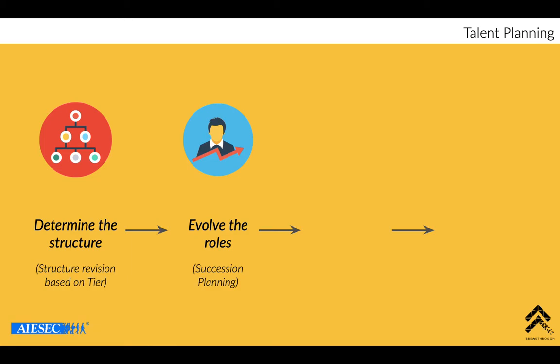Other than that, look into possible ways that you can evolve the role to include more pipeline nurturing elements in your structure itself. For example for PM, instead of having directors handle the GET process, maybe you want to create an extra opportunity for OCPs to be in charge of GET process — that can be a pipeline nurturing opportunity because people get more exposure towards the PM process.